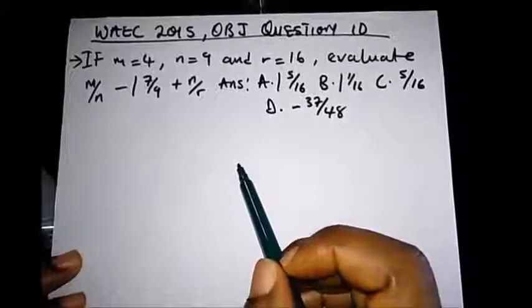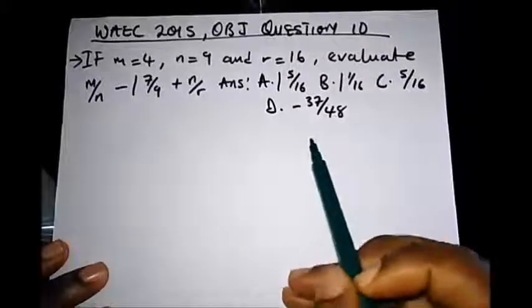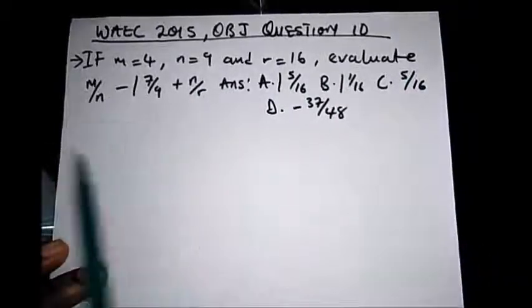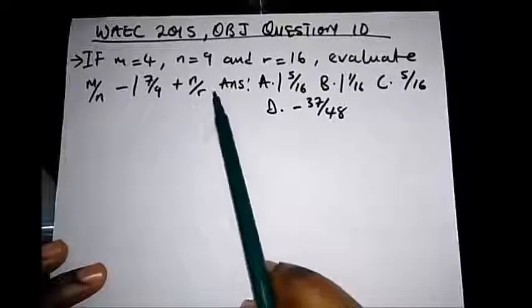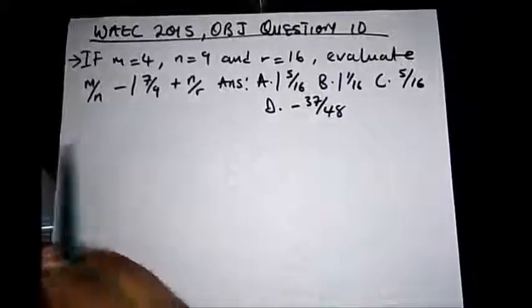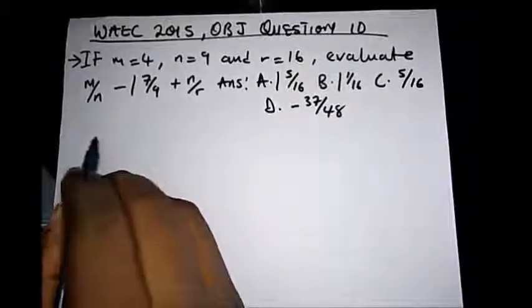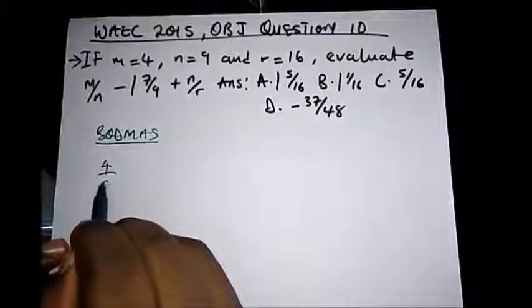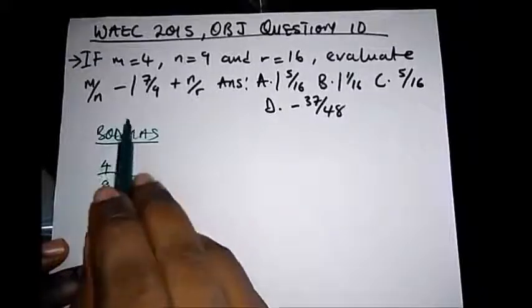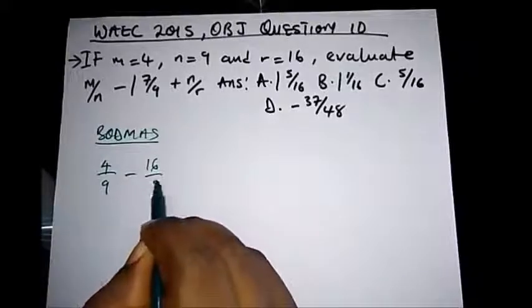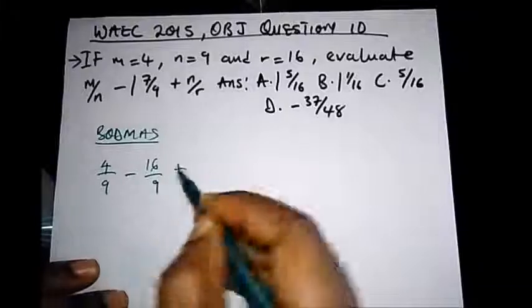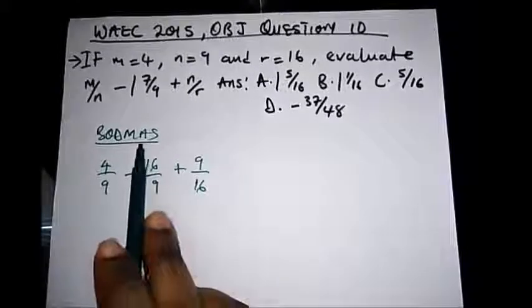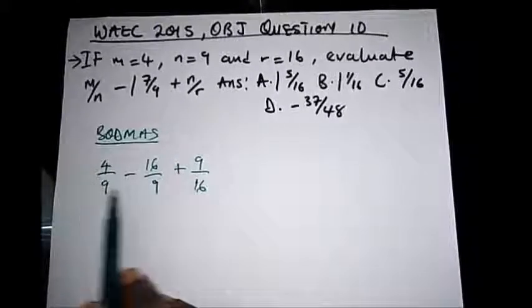Another question is from WAEC 2015, OBJ question 10. It says: if m is 4, n is 9, and r is 16, evaluate m over 9 minus this, plus this. Let's put in the values. Remember to write BODMAS. m is 4, n is 9. Let's change the mixed number to a proper fraction — that's 9 times 1 plus 7, giving 16 over 9. Plus 9 over r, which is 16.